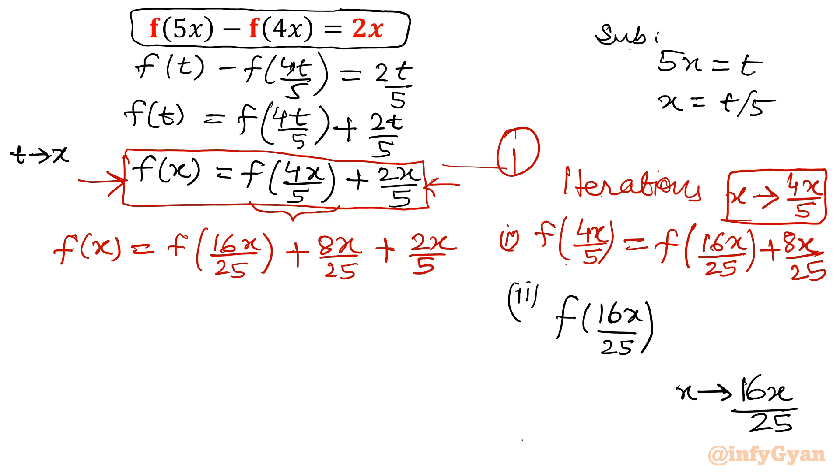Now I have to multiply this 16x over 25 with 4 over 5. So the first functional variable we will have would be 64x over 125. Now the second value, that is 2 over 5 times 16 over 25x, so that value will be 32 over 125x.